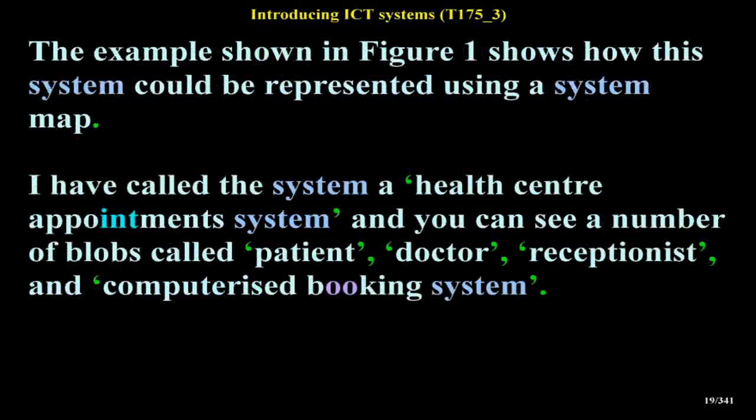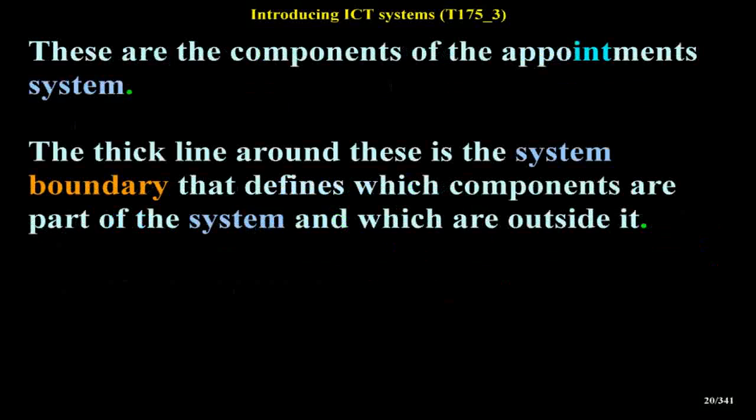Figure 1 shows how the system could be represented using a system map. I have called the system a health center appointment system, and you can see a number of blobs called patient, doctor, receptionist, and computerized booking system — these are the components of the appointment system. The thick line around these is the system boundary that defines which components are part of the system and which are outside it.